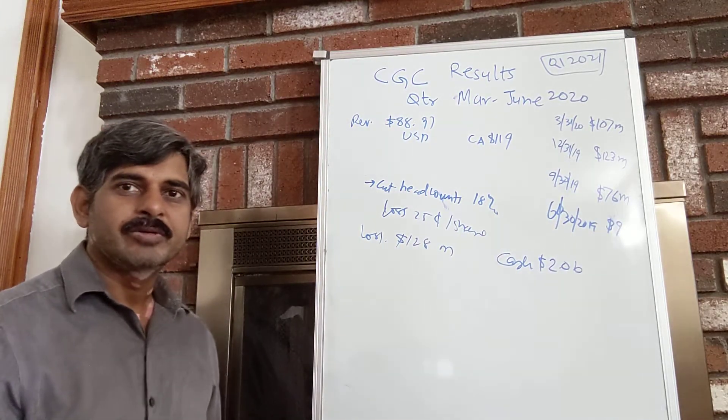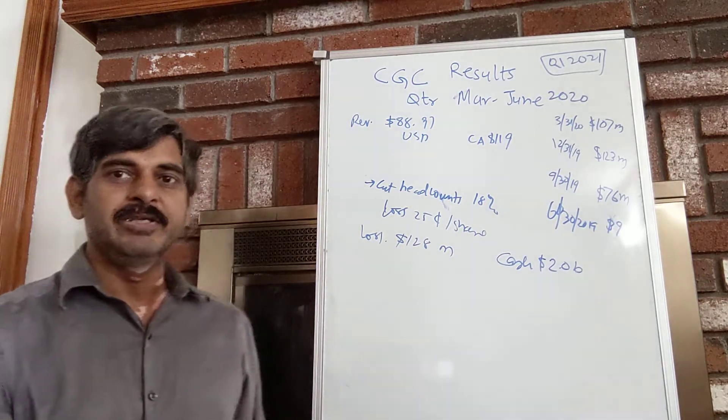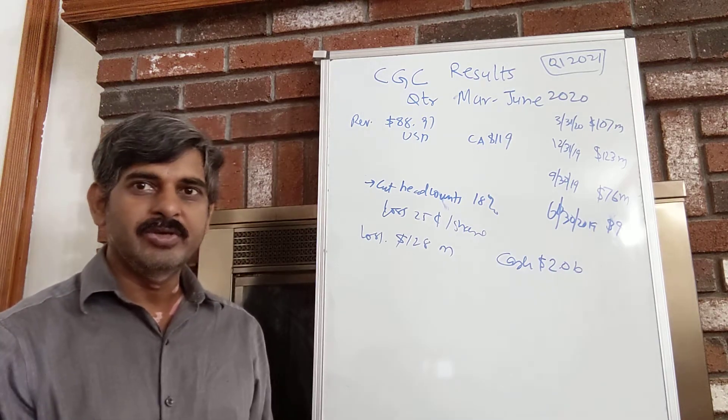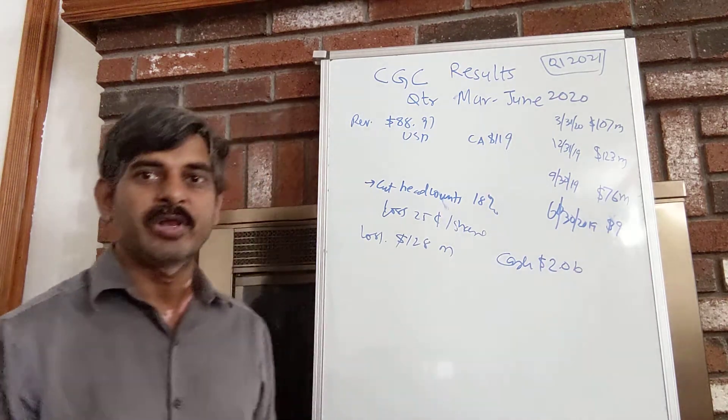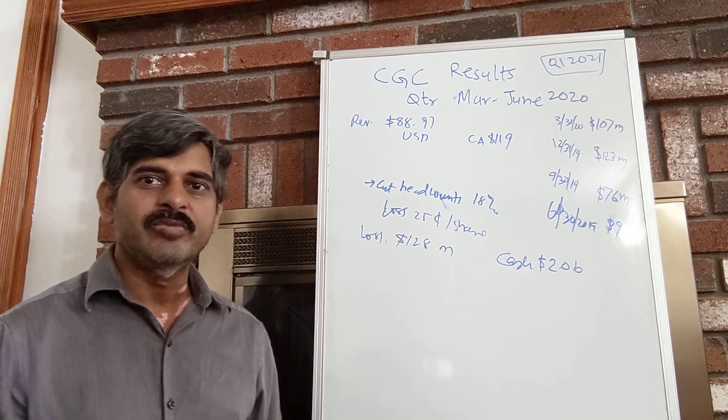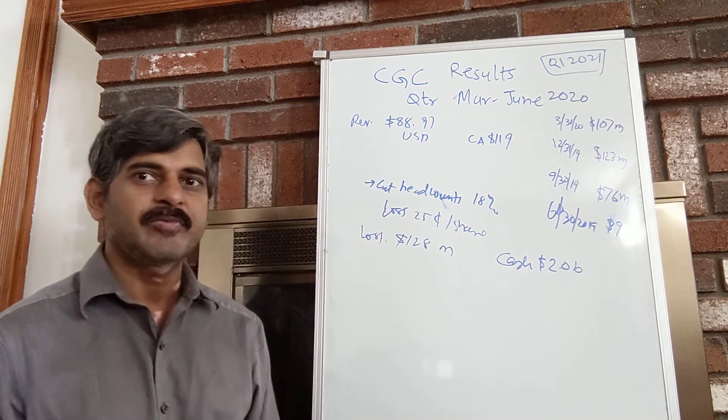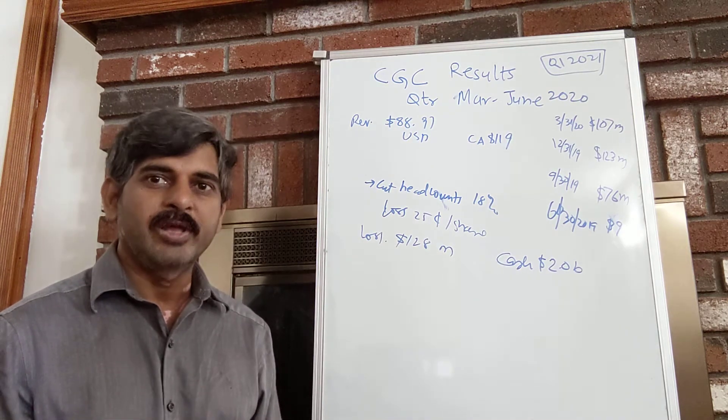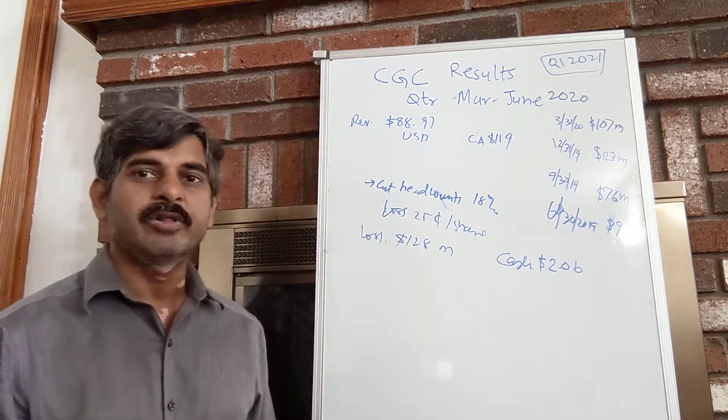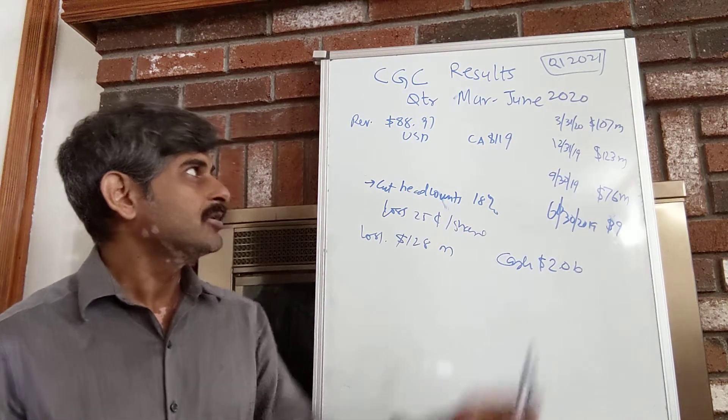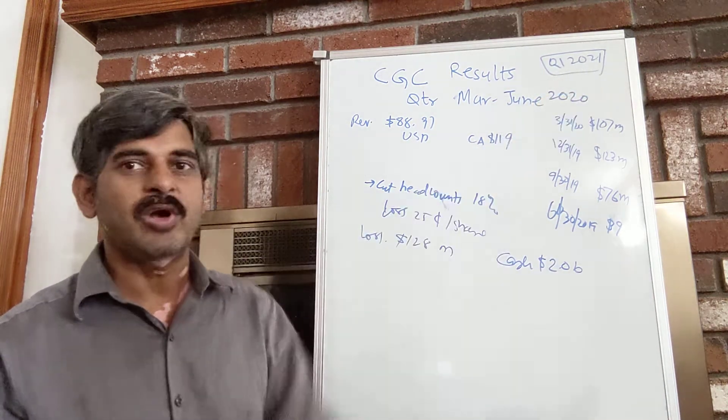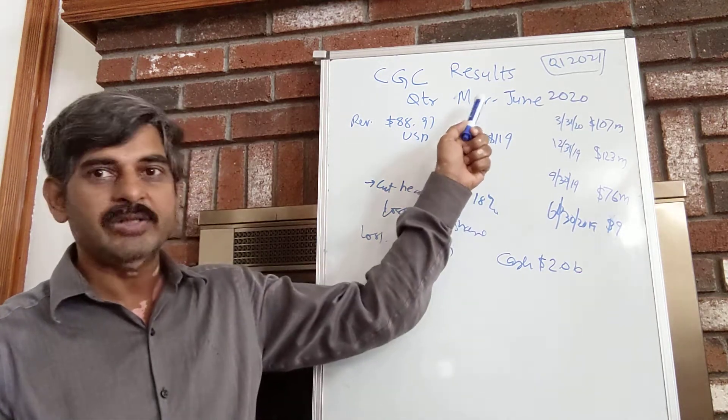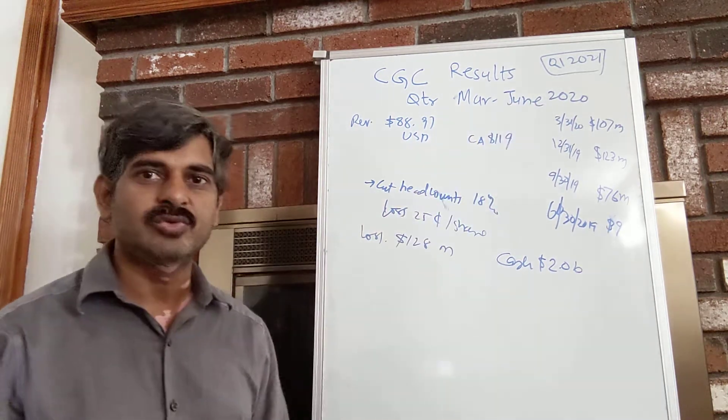Hello everyone, Canopy Growth CGC today announced the Q1 2021 results and I wanted to simplify some of the numbers for you for a quick look. First of all, the way they count quarters is the first quarter 2021 is going to be March to June 2020.